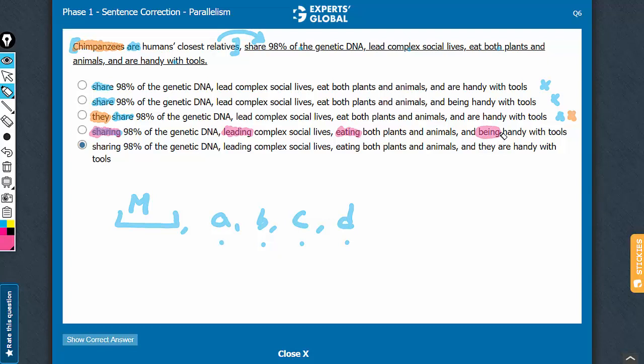Be very careful when you see a being. Many books will tell you that being is almost always incorrect. There is some truth in that, but you have to be careful. Being is correct when it is a part of a noun phrase or when it acts as a passive continuous verb, which is the case here. It is acting as a passive continuous verb.